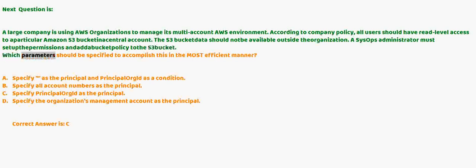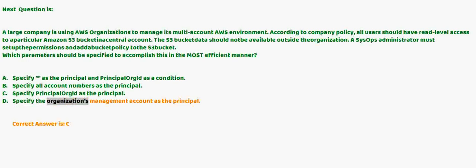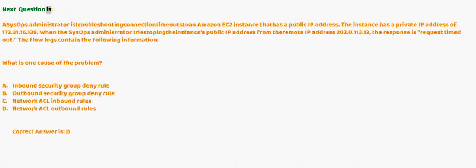Which parameters should be specified to accomplish this in the most efficient manner? A) Specify asterisk as the principal and aws:PrincipalOrgID as a condition. B) Specify all account numbers as the principal. C) Specify aws:PrincipalOrgID as the principal. D) Specify the organization's management account as the principal. Correct answer is C.